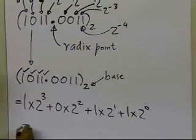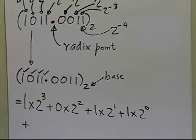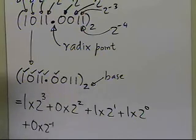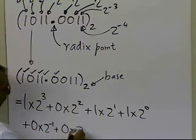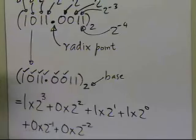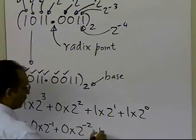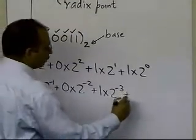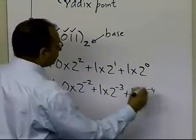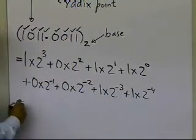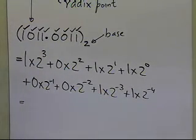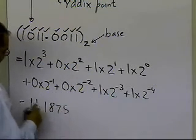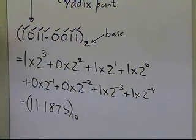Taking care of the digits after the radix point: 0 times 2 to the power minus 1, plus 0 times 2 to the power minus 2, plus 1 times 2 to the power minus 3, plus 1 times 2 to the power minus 4. If you go ahead and calculate this, you get 11.1875, and this is the equivalent number in base 10.